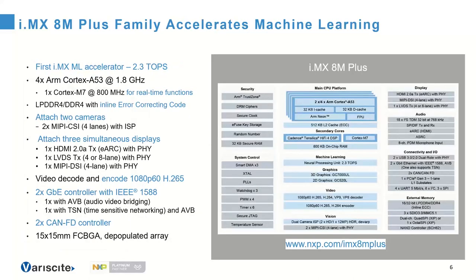The i.MX 8M Plus applications processor is NXP's first device in the family that adds a neural network accelerator. This accelerator delivers 2.3 tera operations per second (TOPS), giving a very significant machine learning performance increase. You can still run machine learning on the A cores, the M core, or the GPU, but when you run it on the NPU, you really see it shine.